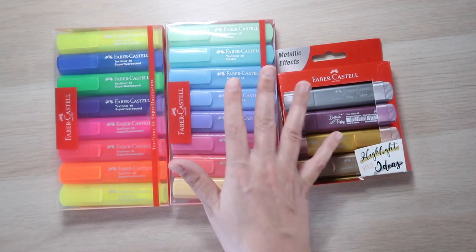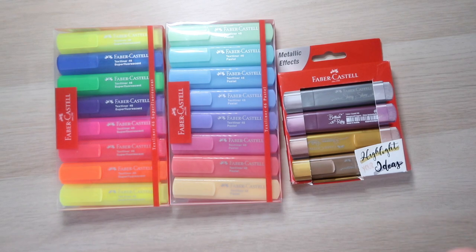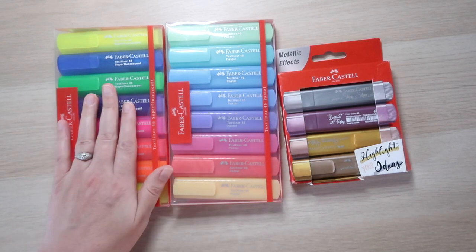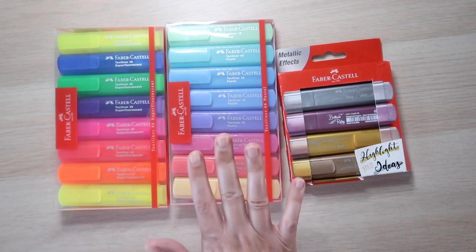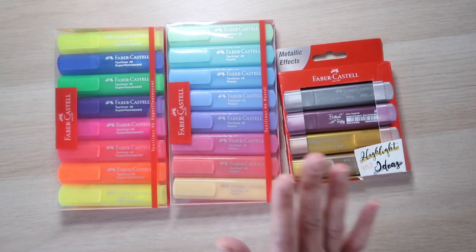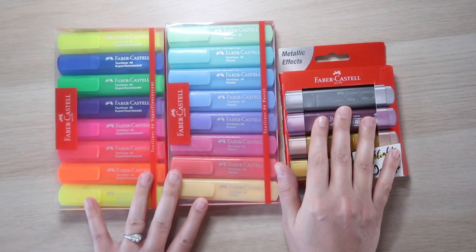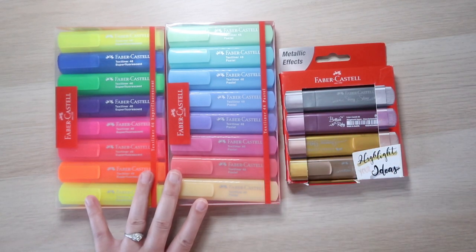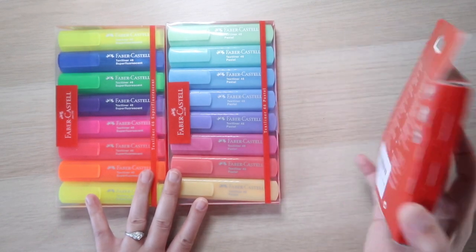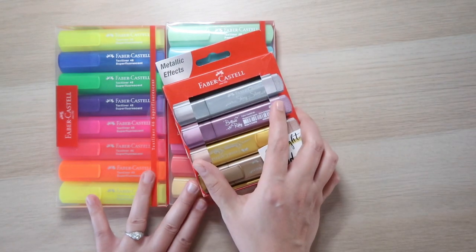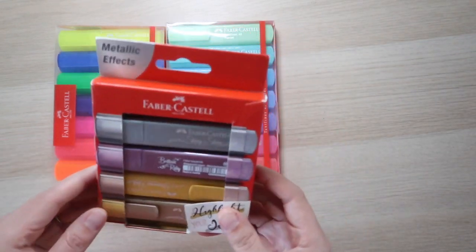So price-wise, when I bought these on Amazon, the super fluorescent were $11 for 8. The pastels were $8 for 8. And the metallic were $7 for 4. Obviously, the metallic are quite a bit pricier, but I would imagine that might be in part because of what they're made of.